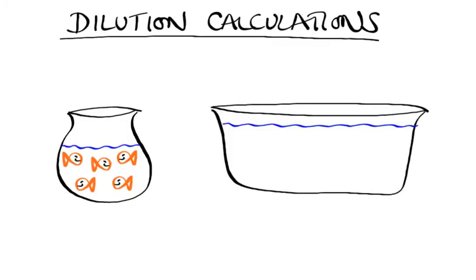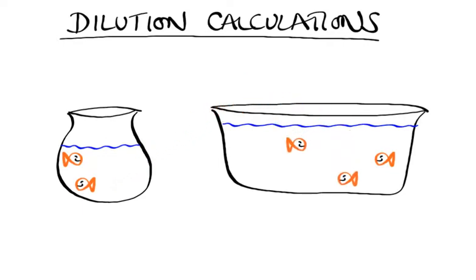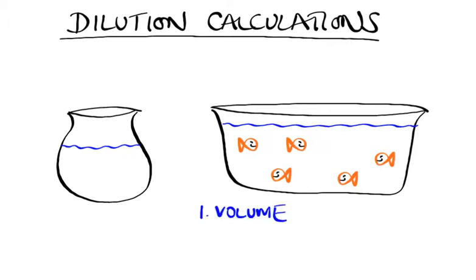In this video I would like to look at dilution calculations. We can see that we've got a goldfish bowl here with five beautiful goldfish, and we've decided that they need a little bit more space so we're going to move them into the bathtub, giving them a new home. When we do this, we can see that some things stay the same and some other things change.